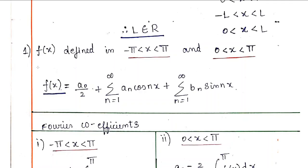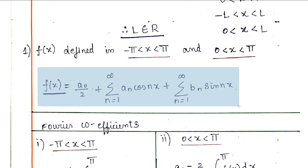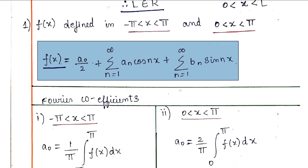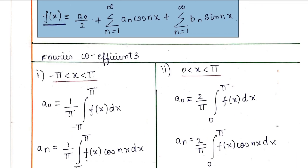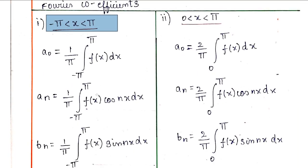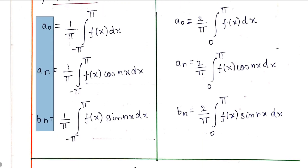For the Fourier series, the conditions are required to be followed. This is the summation. The coefficients are important. There is a coefficient in this case, because there is a formula in this case.